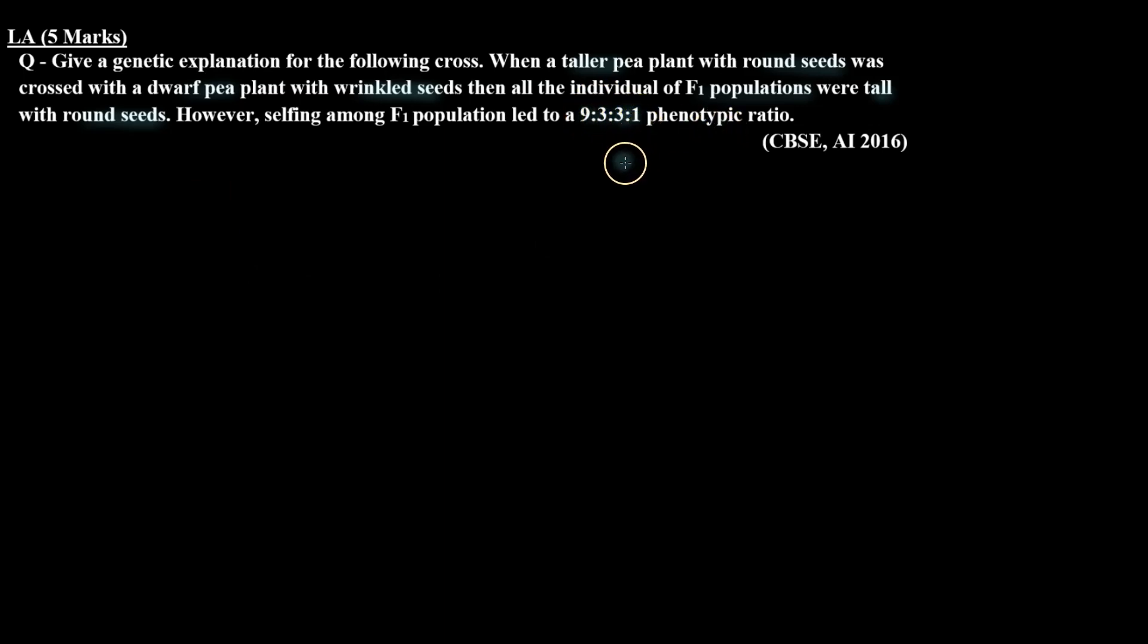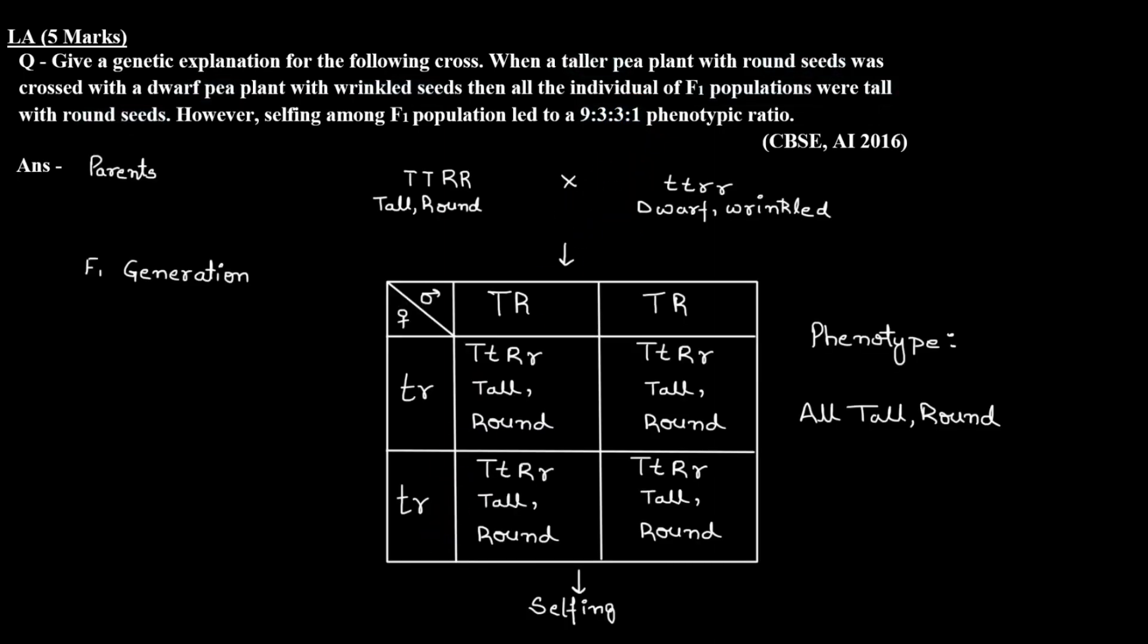So let's check the answer. First of all, let's check the cross. We have a tall pea plant with round seeds. We know that tall character and round seed are both dominant characters, so the genotype of this plant can be heterozygous or homozygous. Then we have crossed it with a dwarf pea plant with wrinkled seeds, and we know that dwarf and wrinkled are both recessive characters.